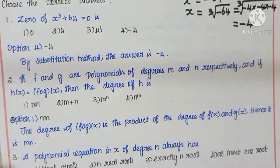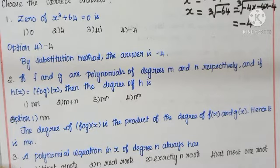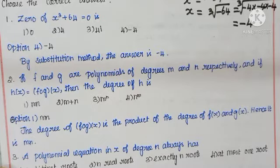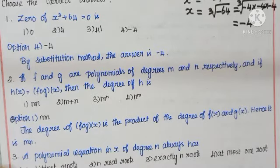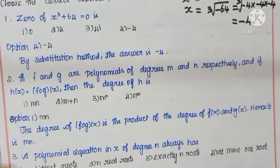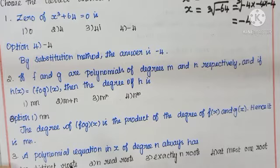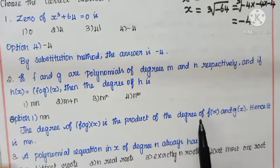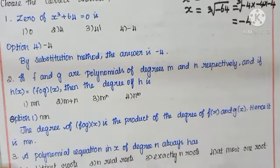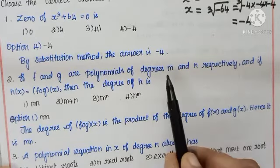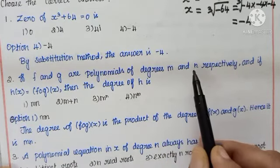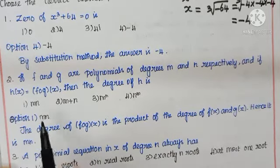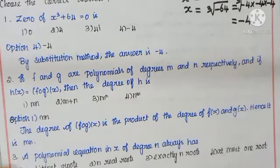Question number 2: if f and g are polynomials of degree m and n respectively, and h(x) = f∘g(x), then the degree of h is to be found. The degree of f∘g(x) is the product of the degrees of f(x) and g(x). Given f(x) has degree m and g(x) has degree n, the product is m × n. So the answer is m × n, and option 1 is the right choice.